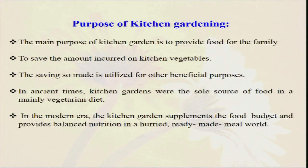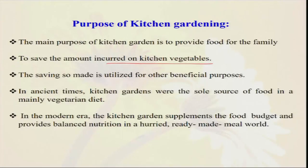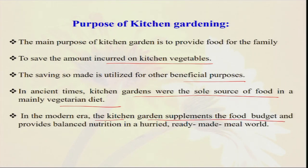The purpose of the kitchen garden is to provide food for the family — most importantly to provide quality and balanced nutrients. It also saves expenditure on kitchen vegetables, as every time you do not have to go to the market where it can be very costly. The kitchen garden also enables effective utilization of kitchen waste and water — kitchen waste can be composted and that compost can again be used for your vegetable garden. In ancient times, kitchen gardens were the only source of food, mainly for vegetarian diet, and in the modern era the kitchen garden supplements food and balanced nutrition.